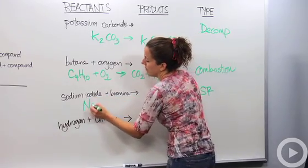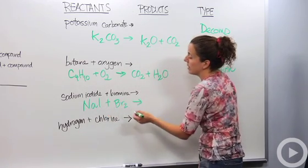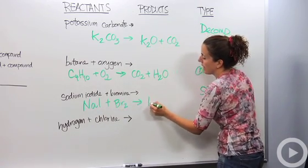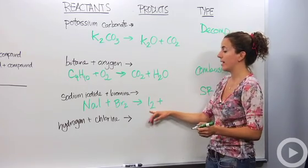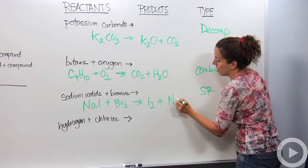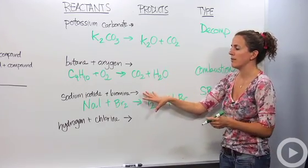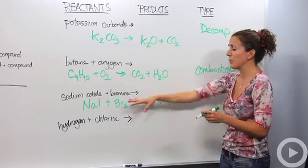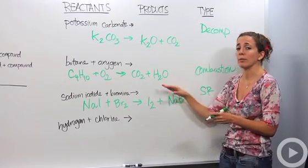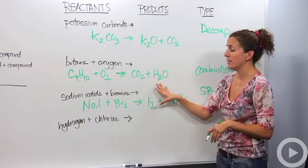So we're going to have sodium iodide plus bromine gas is going to yield, these are going to replace each other so iodine is now going to be on its own. Don't forget iodine is a diatomic so it's going to be I2 plus NaBr. And I'm not going to, I haven't balanced this one or this one. I'm just going to save that for another time. I just want to make sure that we understand how we get these products and be able to identify what type of reaction this is. But I did want to note that these are not balanced yet.